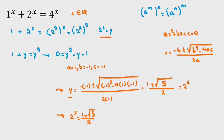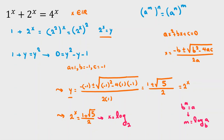By the definition of logarithm — if b to the m equals a, then m equals log base b of a — we can conclude that x equals log base 2 of 1 plus root 5, all over 2. This is our only answer in real numbers.